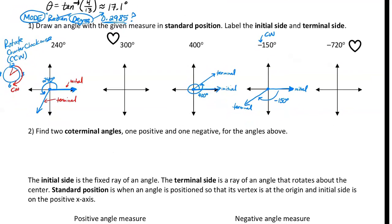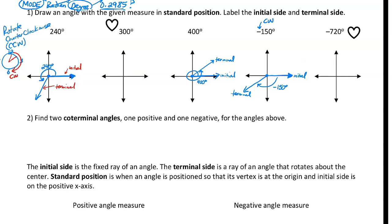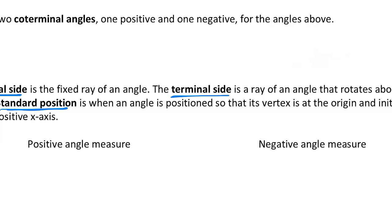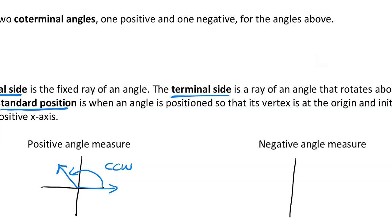So to recap: the initial side, terminal side, and standard position are all defined here. For positive and negative angles — a positive angle measure goes counterclockwise, while a negative angle measure goes clockwise. A positive and a negative angle can look the same; it's just one goes clockwise and the other counterclockwise.